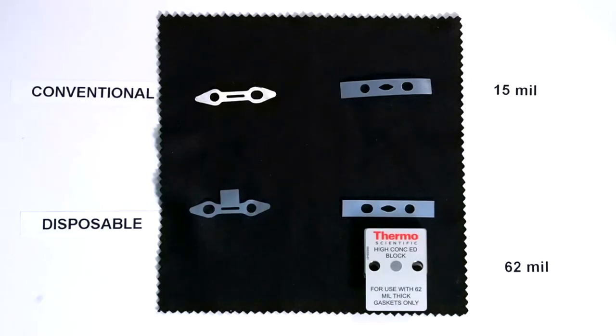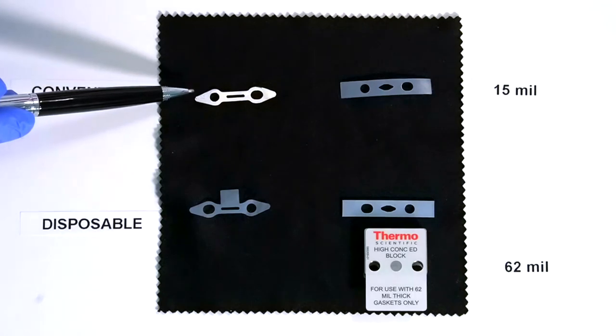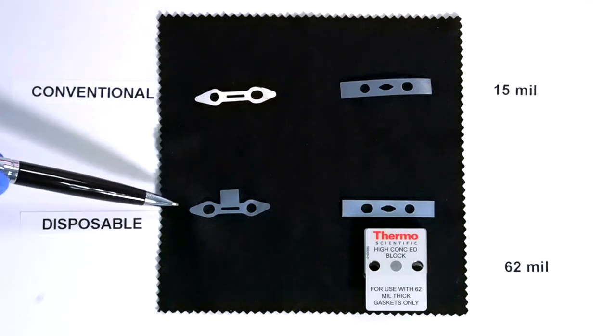There are various different gaskets available to use with electrochemical cells and it is important to use the right gasket for the right application. On the left here you'll see the two most common gaskets. At the top we've got one labeled conventional and at the bottom one that says disposable.